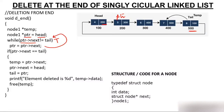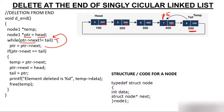I check again: PTR->next is 400, which is not equal to tail 500, condition is true, PTR moves to 400. I check again: PTR->next is now 500. Is 500 not equal to tail (500)? No — it is equal. Condition becomes false. The moment the condition becomes false, I come out of the loop.